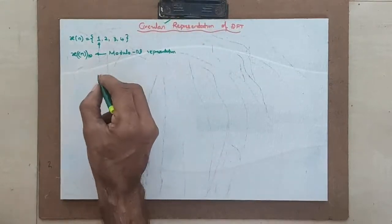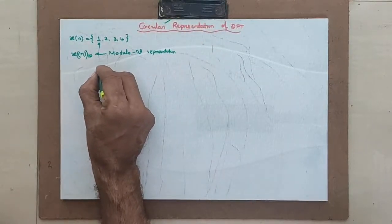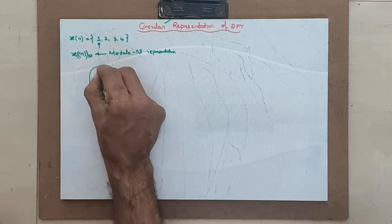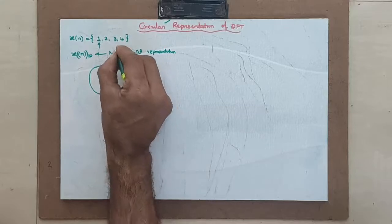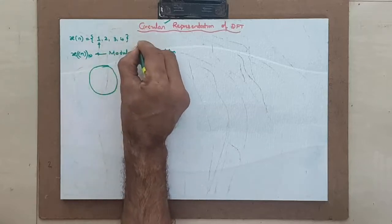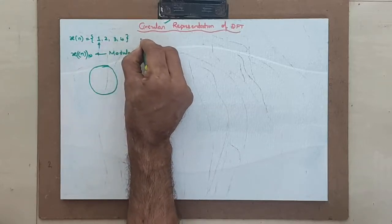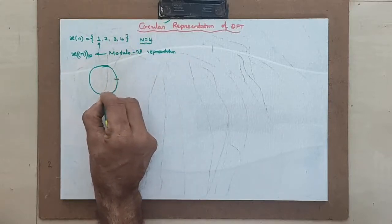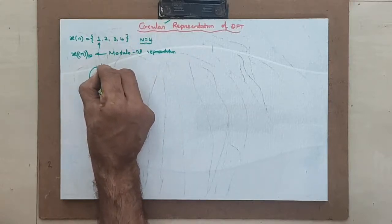How exactly we represent it? Just very simple, try to put a circle. This is obviously n equal to 4, because 4 signals are there. Try to divide it 1, 2, 3 and 4.